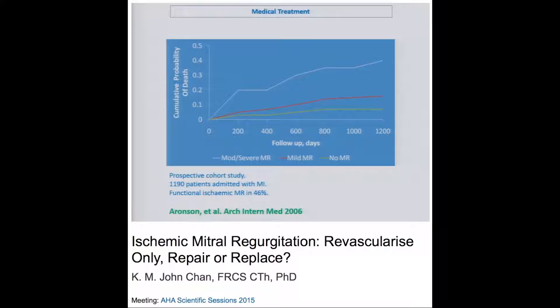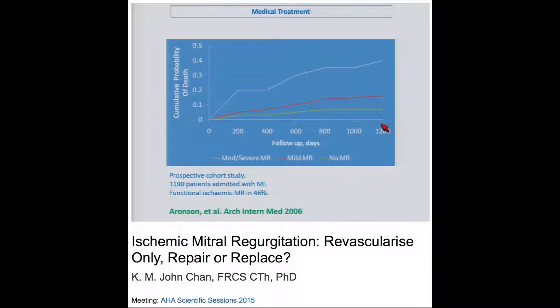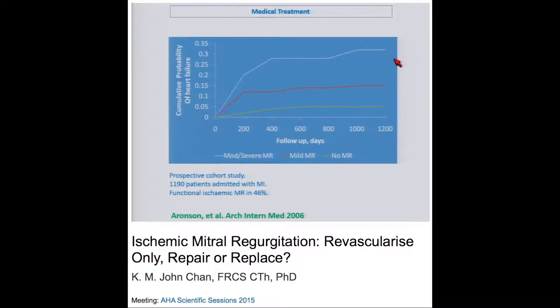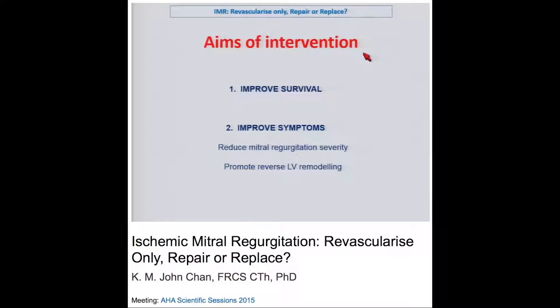Medical treatment in this patient does have an adverse outcome. In this cohort study of 1,200 patients admitted with myocardial infarction, 46% had functional ischemic MR. The green line showed no MR, red line mild MR, and blue line moderate or severe MR — cumulative probability of death. Even in mild MR, the probability of death is twice that of no MR at 5 years, and significantly greater in moderate or severe MR. The same results hold for probability of heart failure.